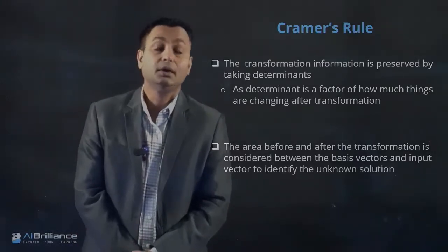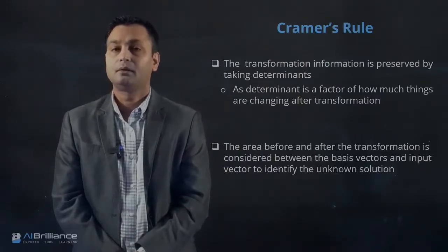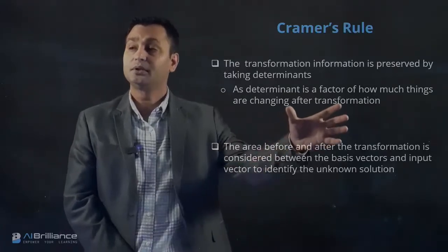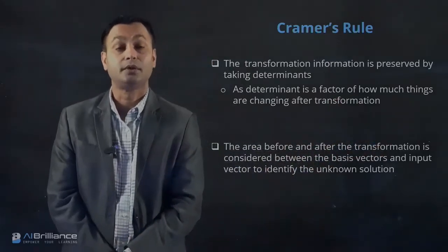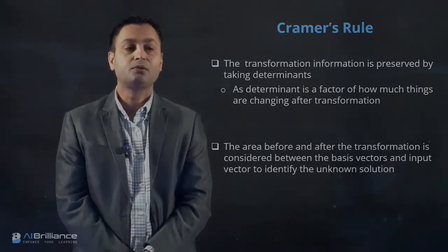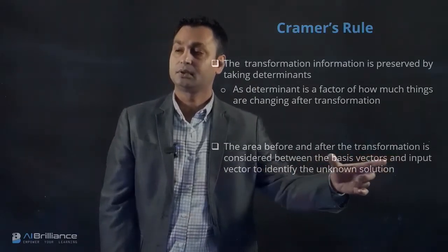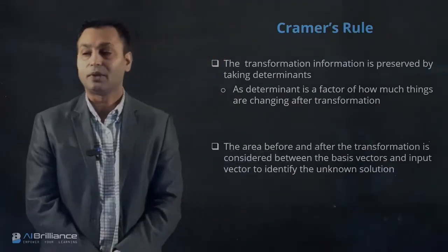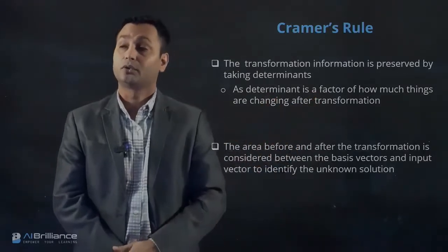When talking about Cramer's rule, the transformation information comes into picture with the help of determinants. A determinant is a factor of how much things are changing after transformation — something we discussed geometrically in previous lectures. We use that notion: the area before and after transformation, considering the basis vector and input vector, to identify the unknown solution.